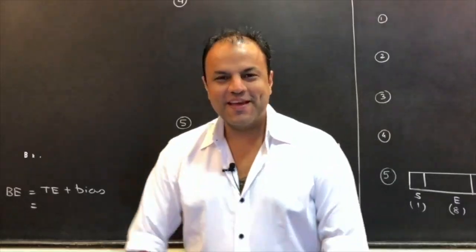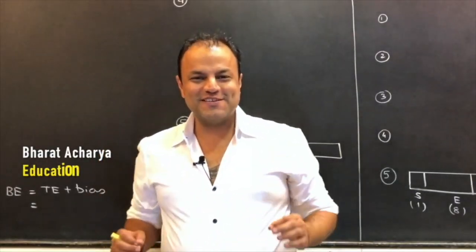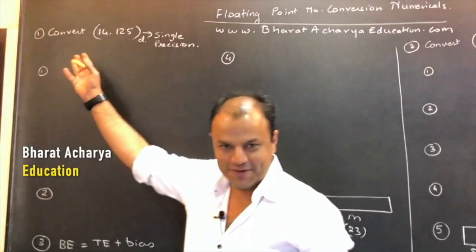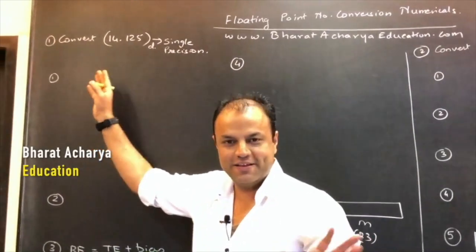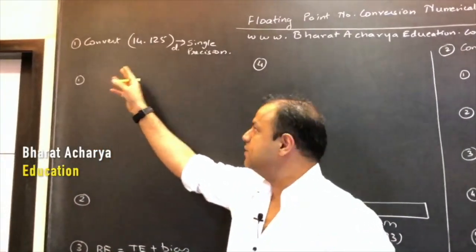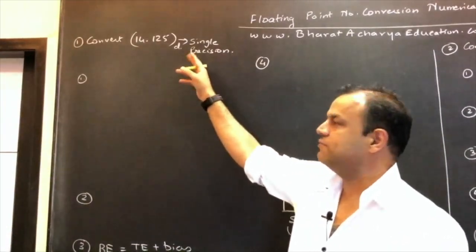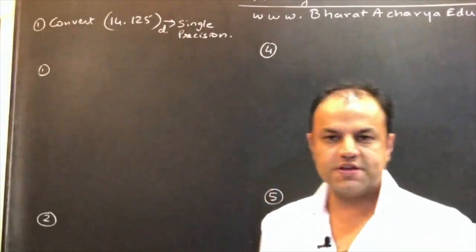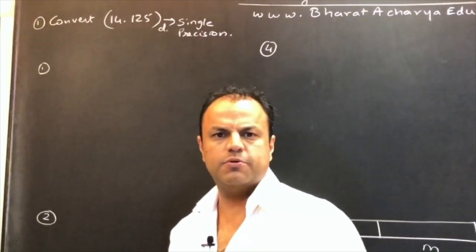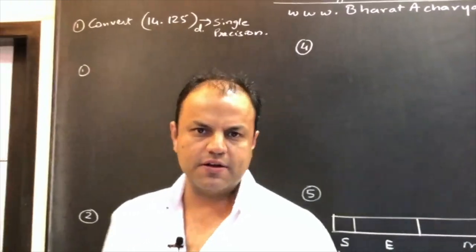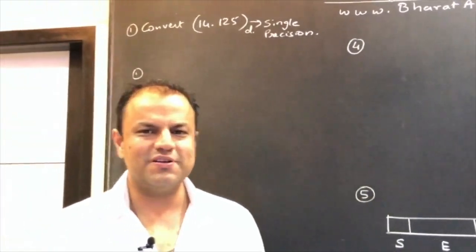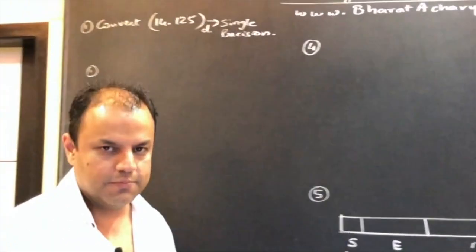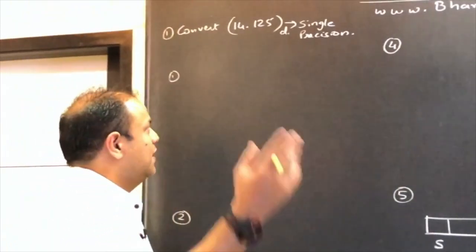Our first question is: convert the number 14.125 decimal into single precision — or double precision, whatever they want to ask. This is how it will appear in the paper. The procedure is the same; it's just the bias value that changes.